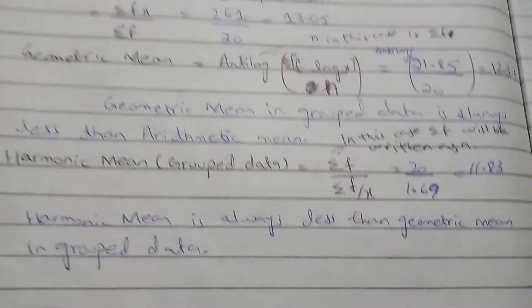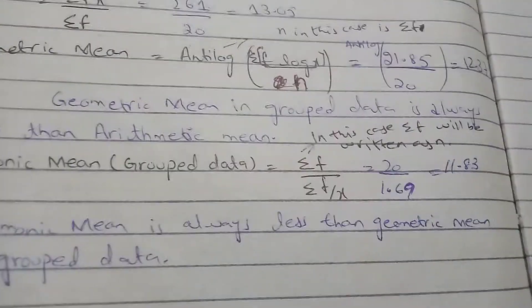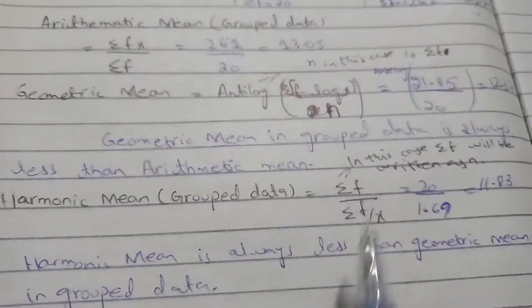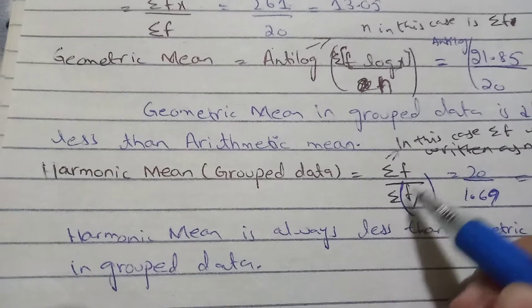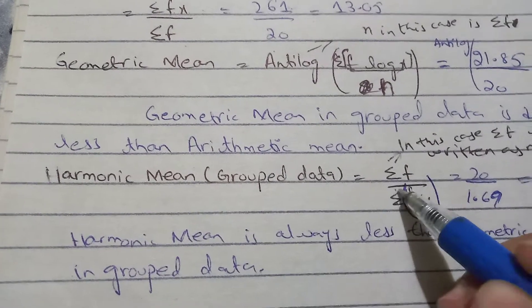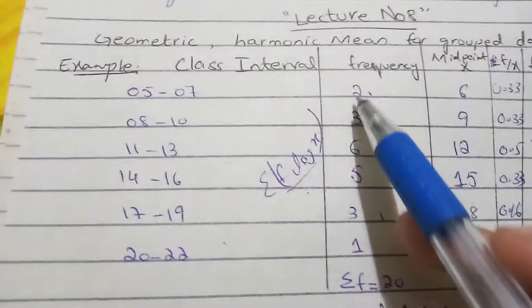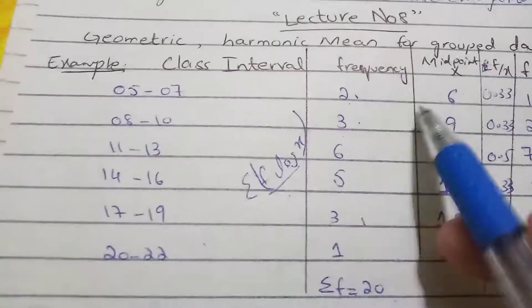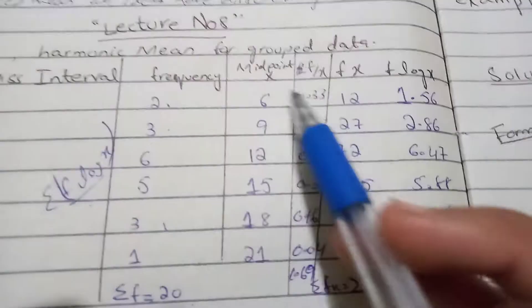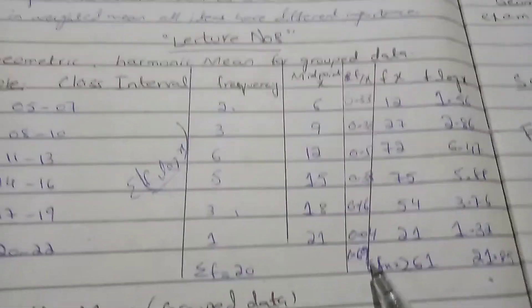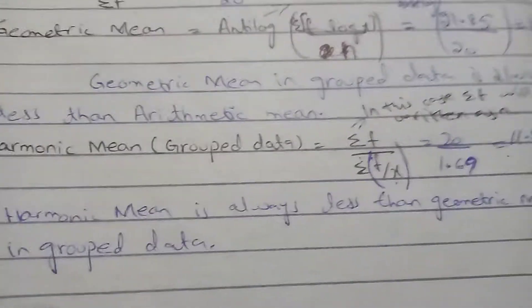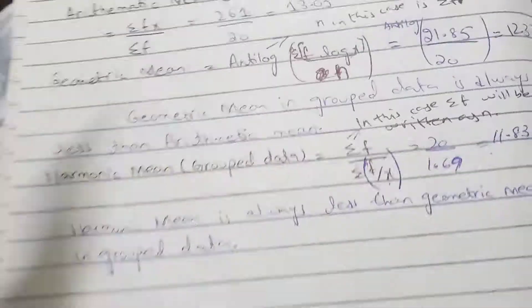Now we find the harmonic mean. We need summation f, which is 20, and a new column of f divided by x. We divide each frequency by its corresponding midpoint — for example, 2 divided by 6, 3 divided by 9, and so on. We complete the column, add all the values to get summation of f/x, and then the harmonic mean is summation f divided by summation(f/x).